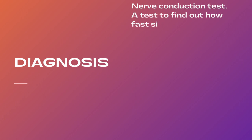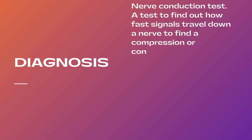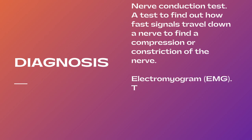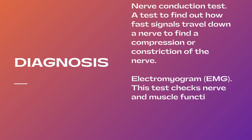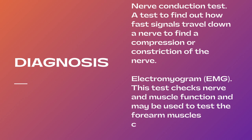After symptoms, there comes the diagnosis of cubital tunnel syndrome. There are two basic tests: nerve conduction test and electromyogram test. Nerve conduction test is for the ulnar nerve — it finds out how fast signals travel through a nerve to find compression or constriction of the nerve. Electromyogram tests nerve and muscle function and may be used to test the forearm muscles controlled by this nerve.